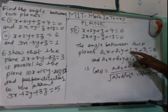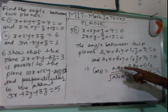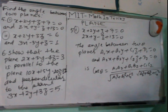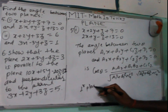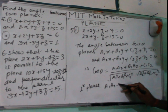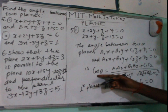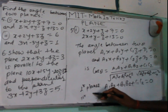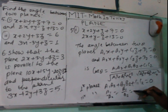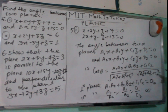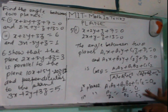Additional conditions: For perpendicular planes, A₁A₂ + B₁B₂ + C₁C₂ = 0 (since cos 90° = 0). For parallel planes, A₁/A₂ = B₁/B₂ = C₁/C₂ — the coefficients are proportional.